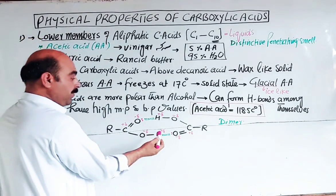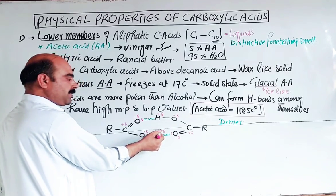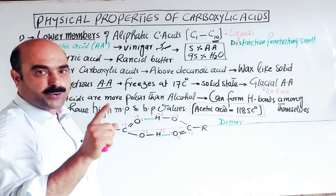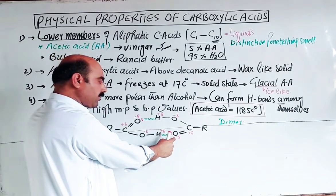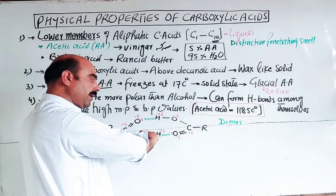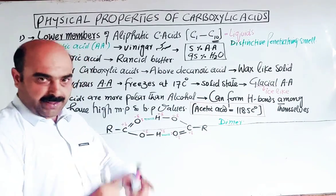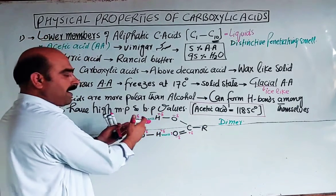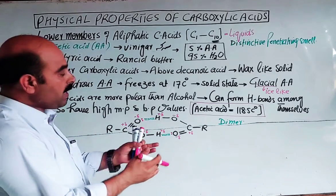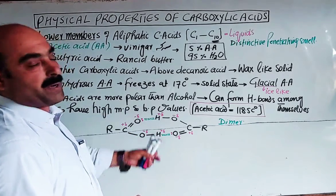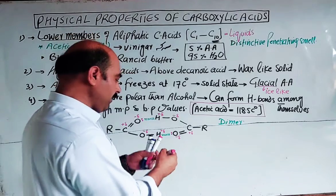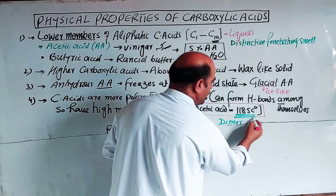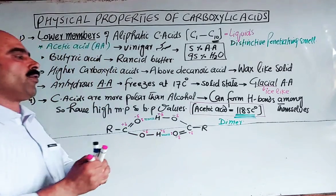Hydrogen bonding is defined as: the force of attraction between the partial positive hydrogen atom of one molecule and the lone pair of electrons of oxygen, nitrogen, or fluorine of a neighboring molecule. Due to this intermolecular hydrogen bonding among themselves, carboxylic acids have high melting points and boiling points. Solubility also depends on hydrogen bonding.